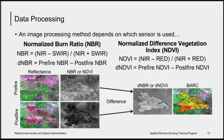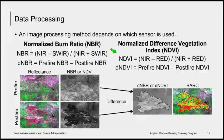Creating a burn severity map from Landsat imagery requires calculating a ratio between the near-infrared and short-wave infrared bands called the Normalized Burn Ratio, from pre-fire and post-fire images. Some sensors do not have a short-wave infrared band, so a similar approach called the Normalized Difference Vegetation Index, or NDVI, can be used with the near-infrared and red bands. Once these maps are created, the post-fire map is subtracted from the pre-fire map to create a Difference Normalized Burn Ratio, or DNBR. The burned areas are then categorized into low, medium, and high burn severity to create the Burned Area Reflectance Classification, or BARC map.